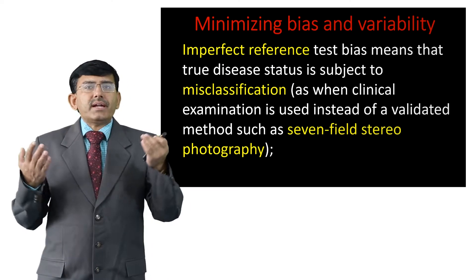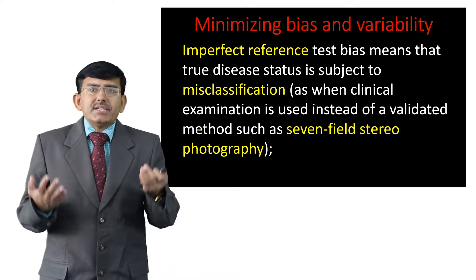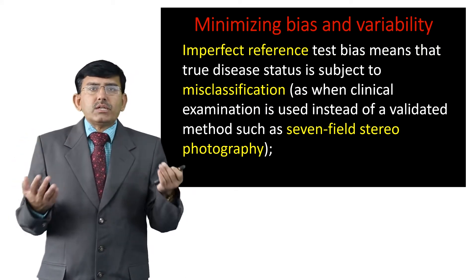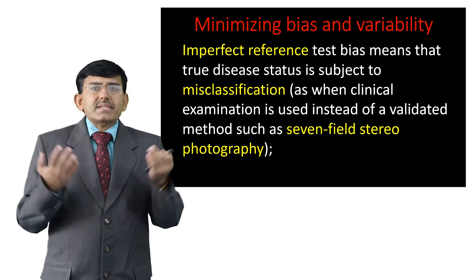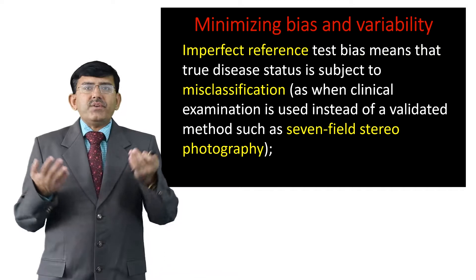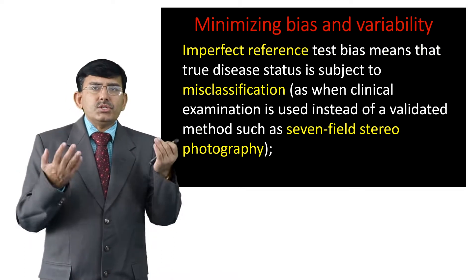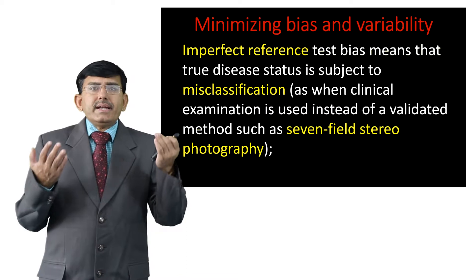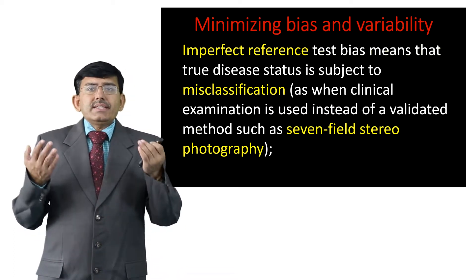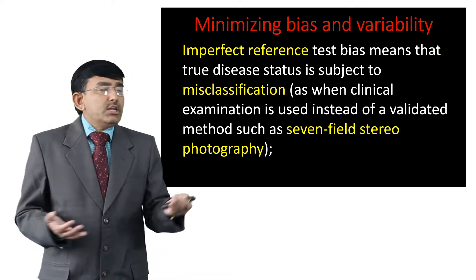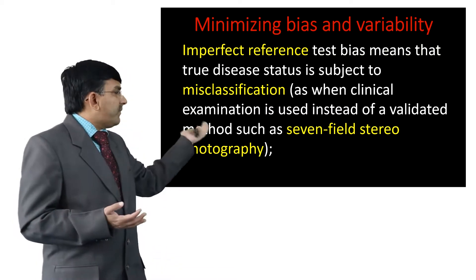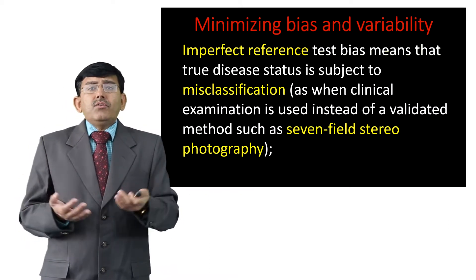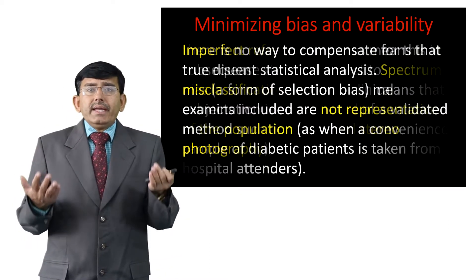In an imperfect reference test, bias means that true disease status is subject to misclassification — as when clinical examination is used instead of a validated method such as seven-field stereo video photography, which is also one of the prominent methods for acquiring images.